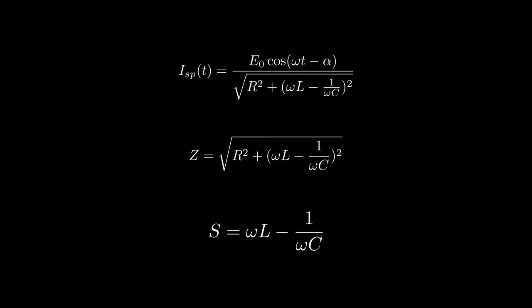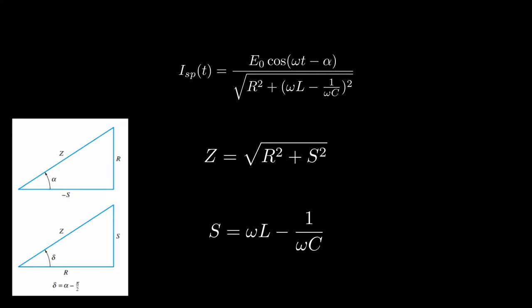The second squared part under the square root also has a special name called the reactance, and we denote that as S. When we put all three of these together, we have a Pythagorean-like relationship, and we can represent it with a right triangle as shown on the left. As you can see, the legs of the triangle are R and negative S, the hypotenuse is Z, and the angle is alpha.